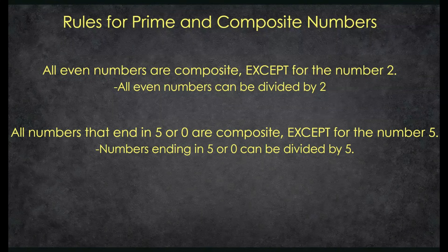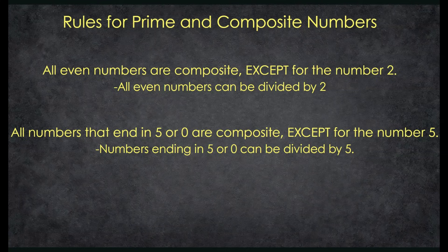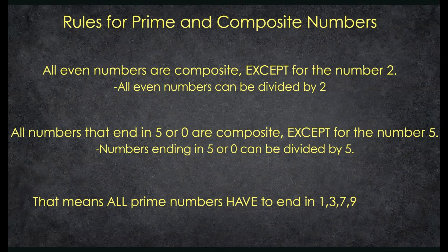A second rule that'll help you determine whether a number is prime or composite: all numbers that end in 5 or 0 are composite except for the number 5 — that's our rule breaker. The reason all numbers ending in 5 or 0 are composite is because they can all be divided by 5. Except for the number 5 itself — there's only one way to make 5, which is 1 times 5. So 2 and 5 are our rule breakers. That means all prime numbers must end in 1, 3, 7, or 9.